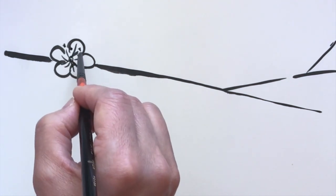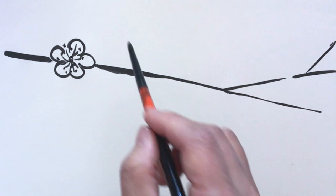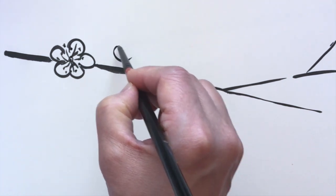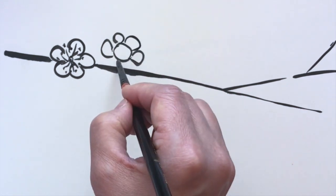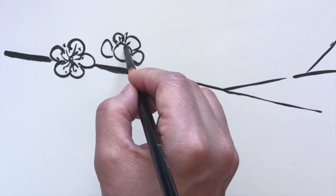So, we just draw the flowers like how we practiced, and we add them to the branches. You can add some that sort of go off the branch like this. They're connected by a little stem.